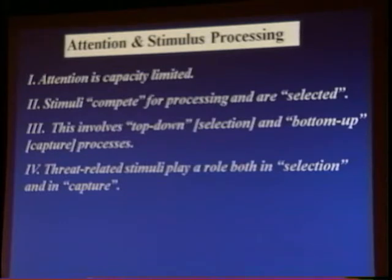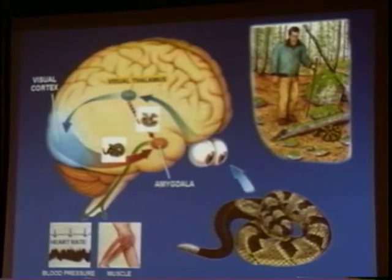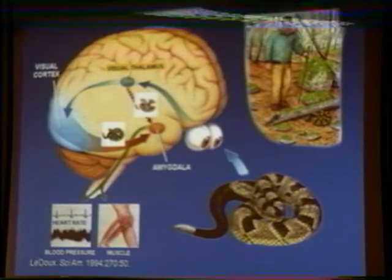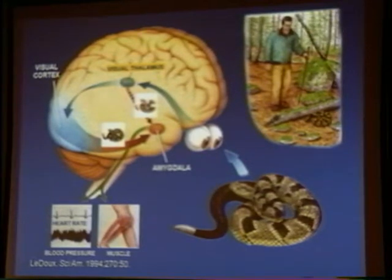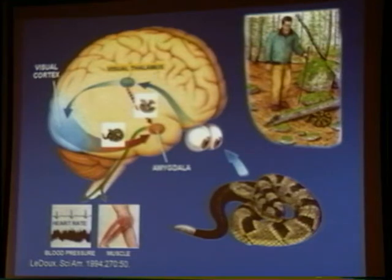Threat stimuli play a critical role in both the selection and capture of stimuli — particularly for individuals with anxiety disorders and, as I hope to show you, for our children with behavioral inhibition. This links to the field of attention in neuroscience through Joe LeDoux, a neuroscientist at New York University, who published a model of attention capture as it relates to threat. Up in the top right corner you can see an individual walking through the woods having a jolly old time, and at the bottom there's a snake that the person is about to encounter and may have stepped on.